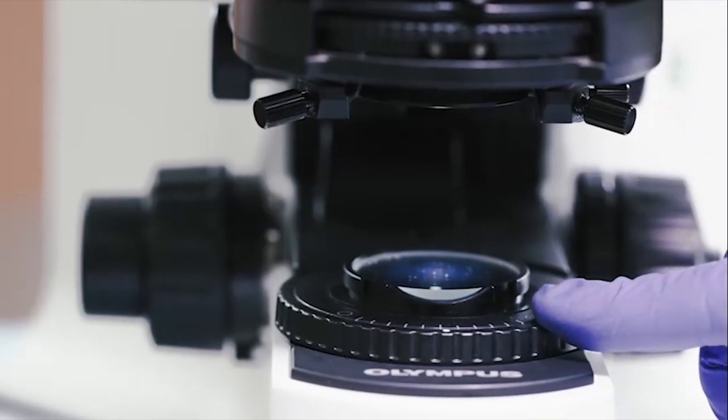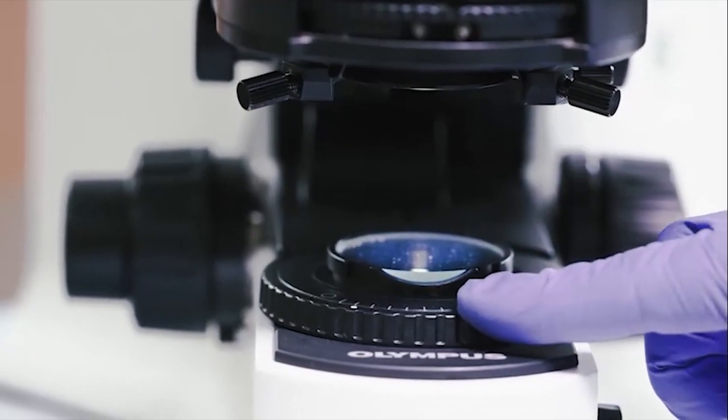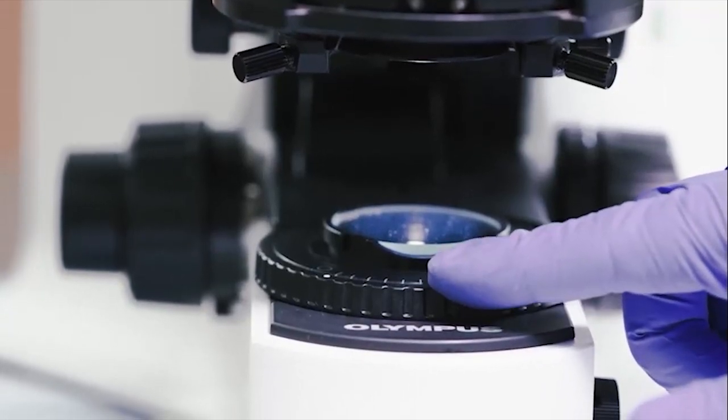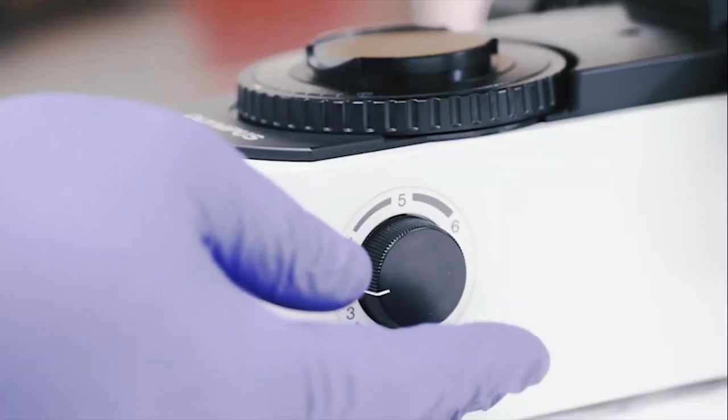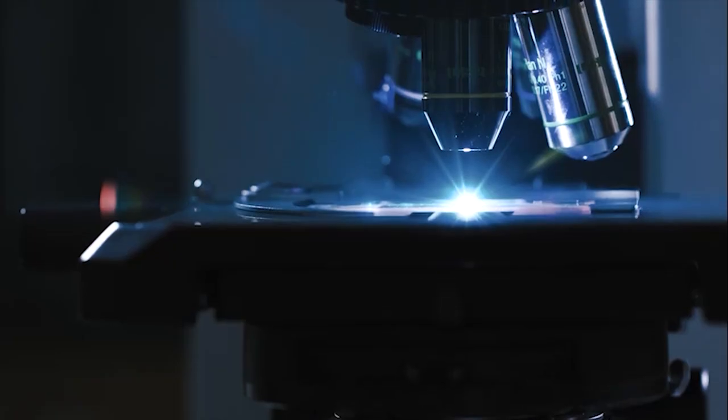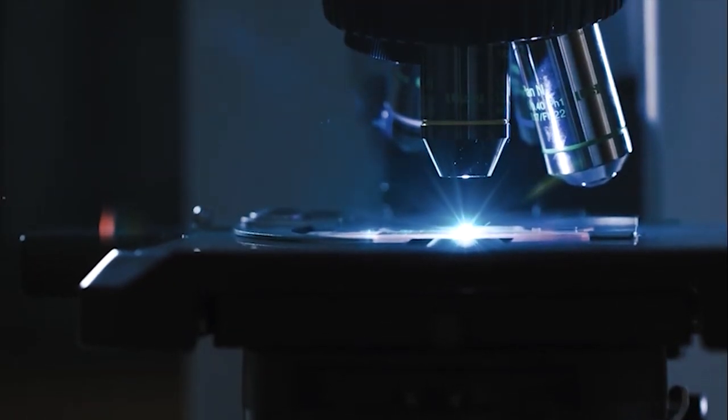Open the field diaphragm until the illuminated image is just larger than the field of view. If more light is needed, use the light source knob. Kohler illumination is now set.